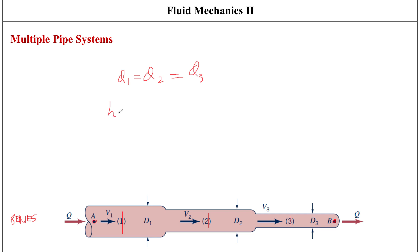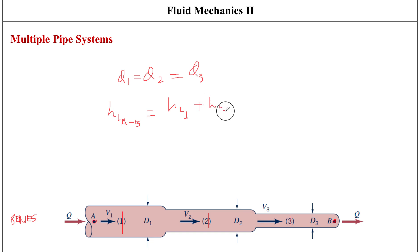If I was looking at head loss from point A to point B, I could write it as head loss at section one plus head loss at section two plus head loss at section three. So these are the two governing equations for a multiple piping system arranged in series.